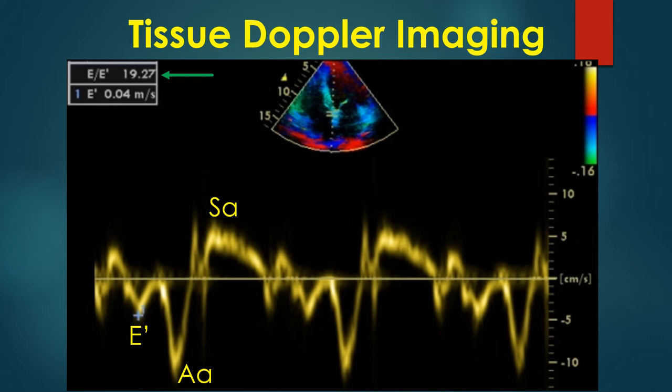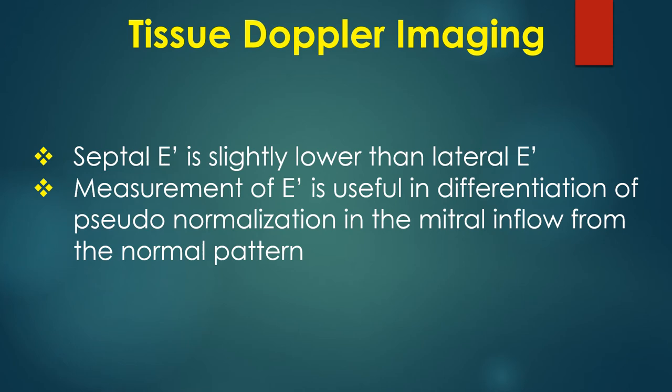The first negative wave is the mitral E prime. The next negative wave after E prime occurs during atrial contraction and is designated AA. The positive wave after AA is the SA wave, representing the systolic myocardial wave recorded as the annulus descends towards the apex. SA at the lateral mitral annulus is a measure of longitudinal systolic function and correlates with left ventricular ejection fraction. Septal E prime is slightly lower than lateral E prime. Measurement of E prime is useful in differentiation of pseudo-normalization in the mitral inflow from the normal pattern.